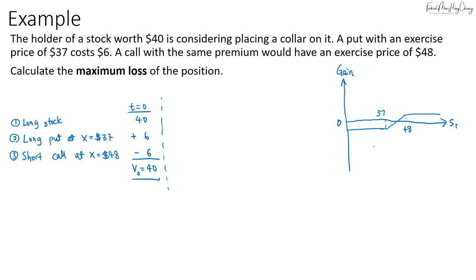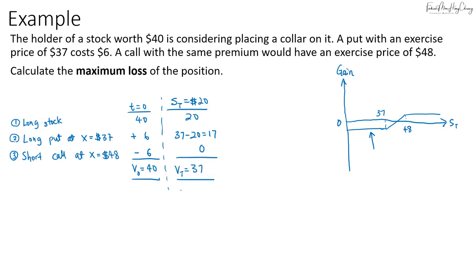The loss is maximum when the spot price is below the strike of the put option, which is $37. Taking a price like $20: we exercise the put option, receiving $37 minus $20, which is $17. The call option is out of the money, so the value of the collar is $37. The gain is $37 minus $40, so the maximum loss is $3.